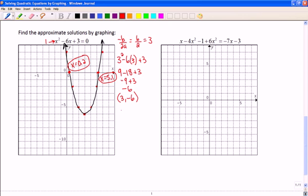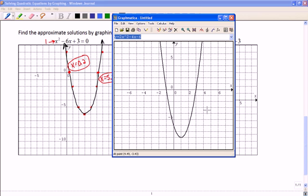So if you do have access to your graphing calculator, then that would be a great way to do it. If you also have some software, we can take a look and see what y equals x squared minus 6x plus 3 really looks like.